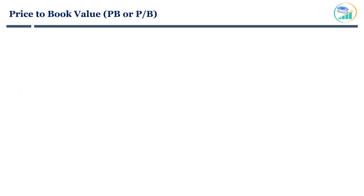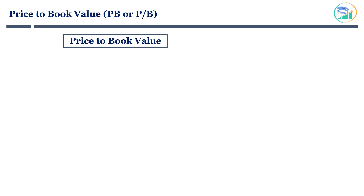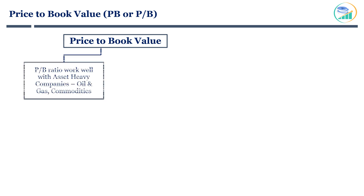Let's understand when and how to use PB ratio as a relative valuation metric. Book value is the amount of money left on the table after a company pays off its debt obligations. In case a company enters bankruptcy or needs to close operations, this is the amount of money investors can expect to get back. Hence, PB ratio works very well for companies that are asset-heavy, like airline, commodity, oil and gas, and metals. Their earnings power comes mainly from tangible assets.